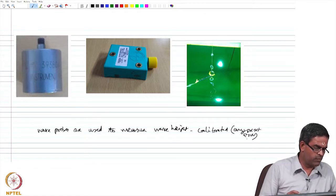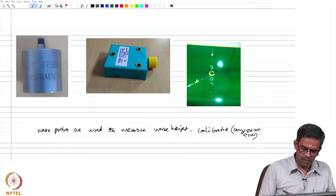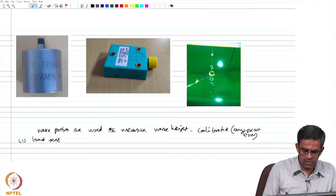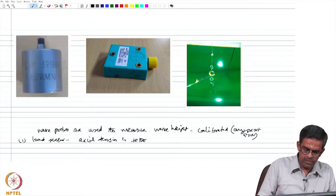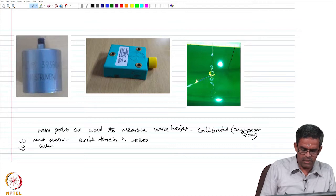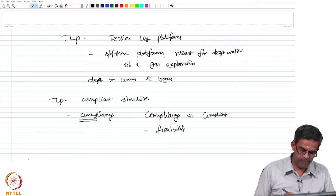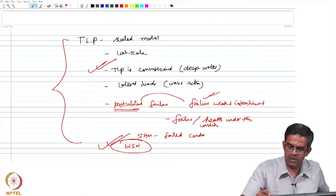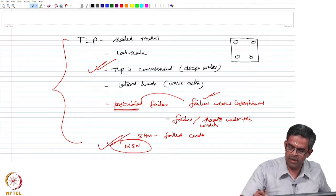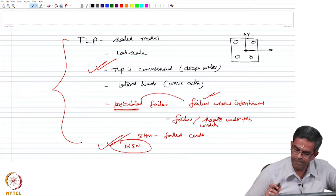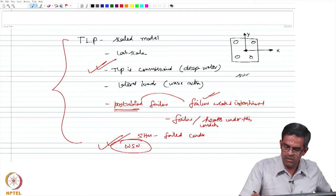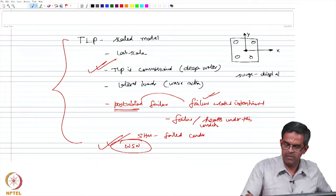The structural health monitoring system consists of different equipment. In this case we need to have load sensors to measure the axial tension in tethers. We need to also measure the inclination. Looking at TLP in general, the rigid body motion of TLP has four legs - if this is my x-axis, this is my y-axis, and the z-axis, it has surge which is the displacement along x, and sway which is displacement along y.